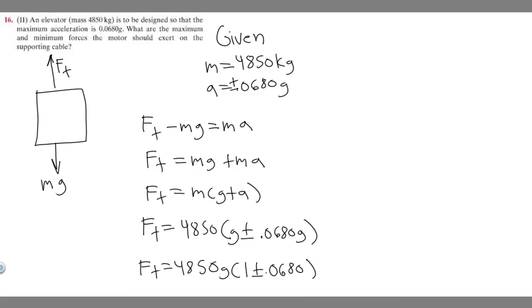The minimum and maximum are going to depend on whether we plus or minus. The max is adding, the min is subtracting. Keep in mind g is the force of gravity, 9.8 meters per second squared.